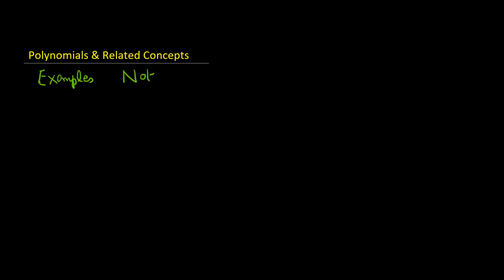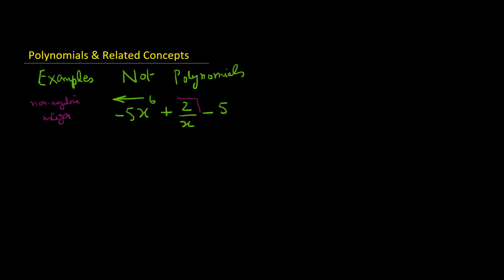Now let's look at a few examples which are not polynomials. For example, minus 5x^6 plus 2 divided by x, minus 5. This is not a polynomial. For all terms of a polynomial, the exponent must be a non-negative integer. The second term, 2 divided by x, is basically 2x raised to the power minus 1, and minus 1 is a negative integer. Therefore, this is not a polynomial.